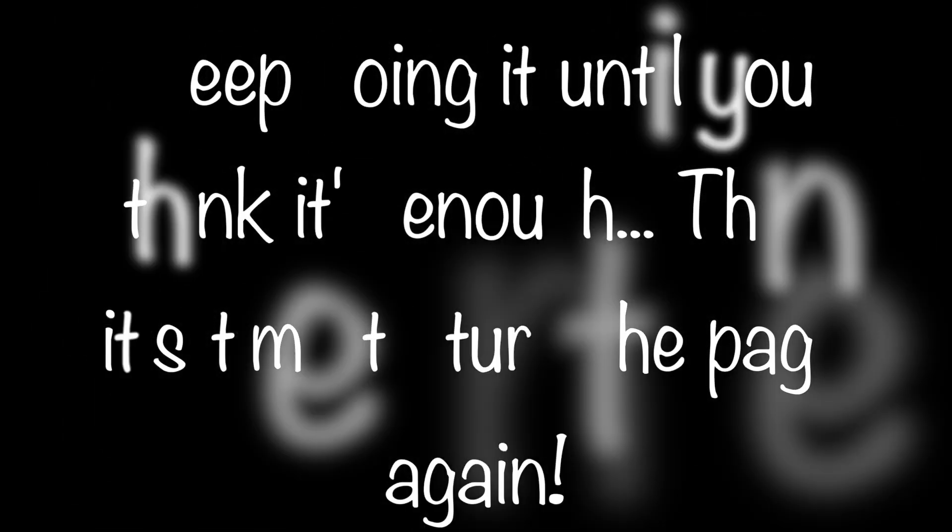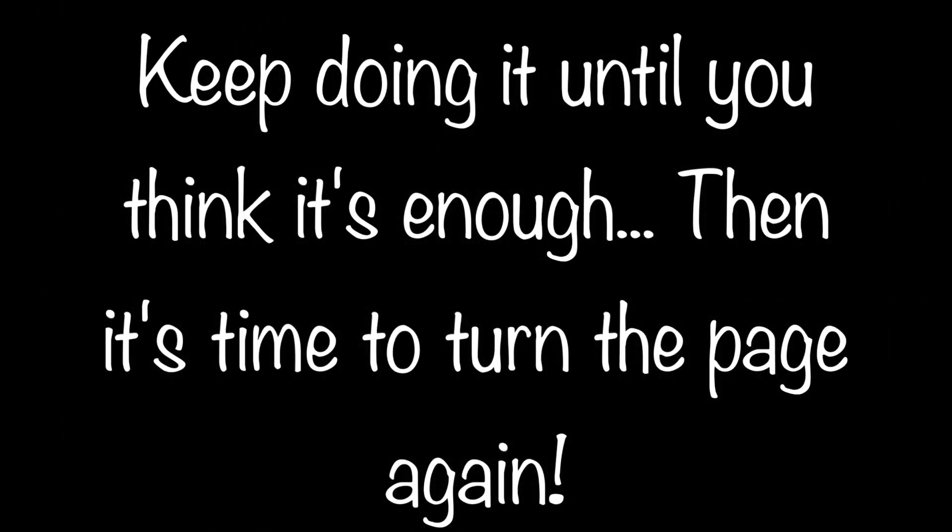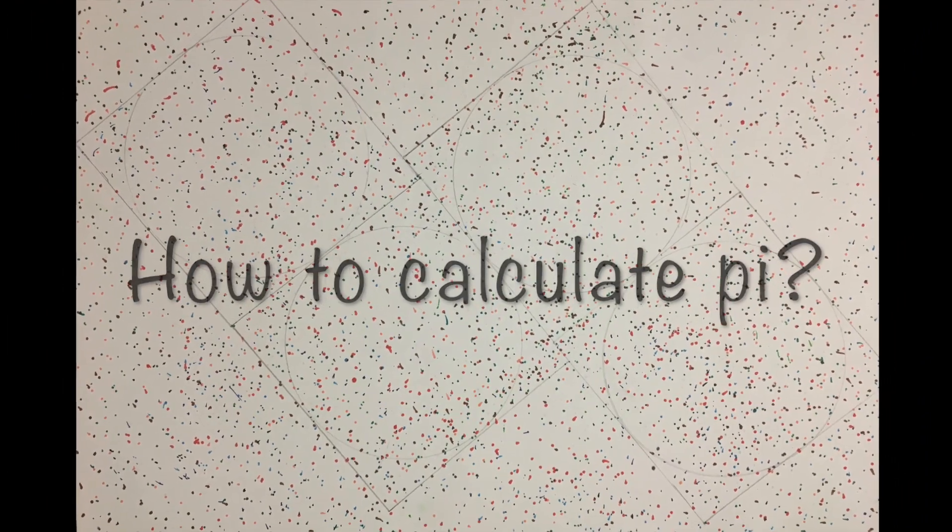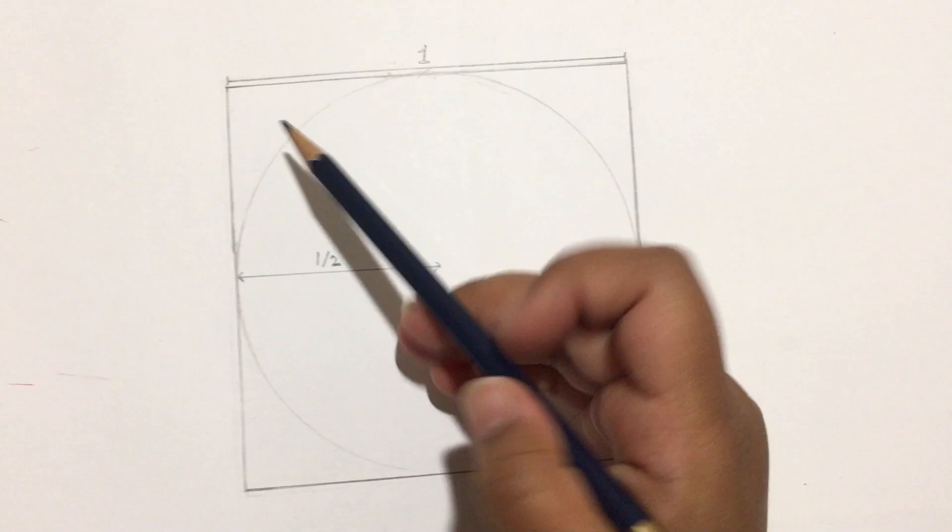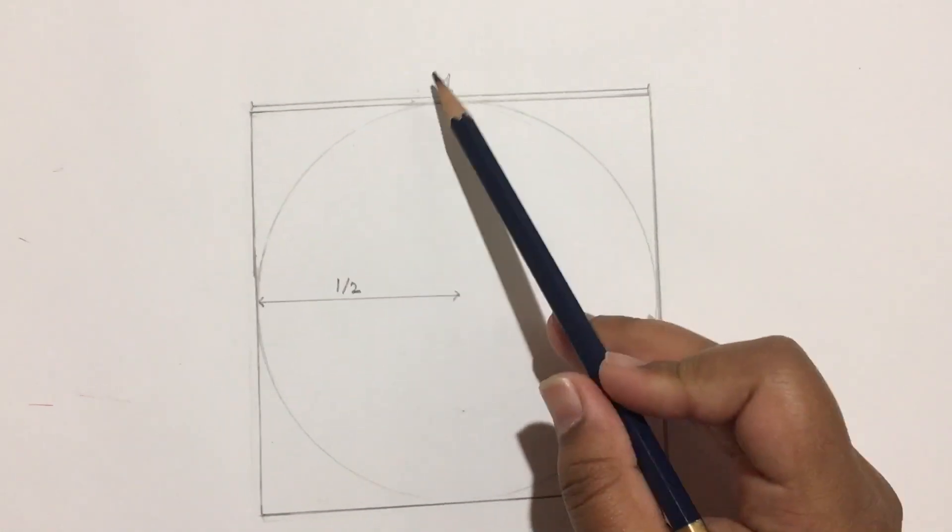Keep doing this until you think it's enough, then turn the page again. This is how it looks. Now I'm going to explain how we're going to calculate pi. Let's assume the side of the square is 1.